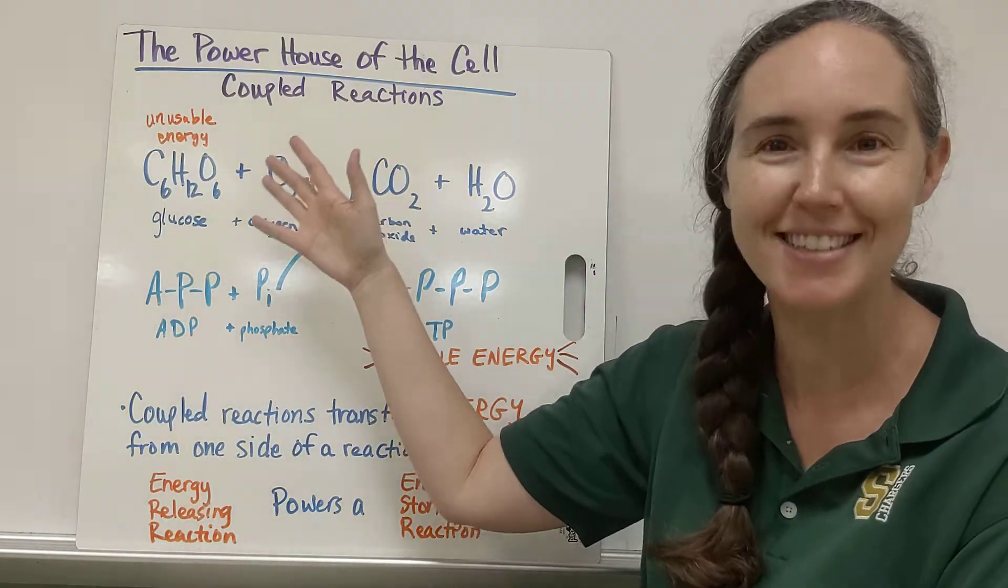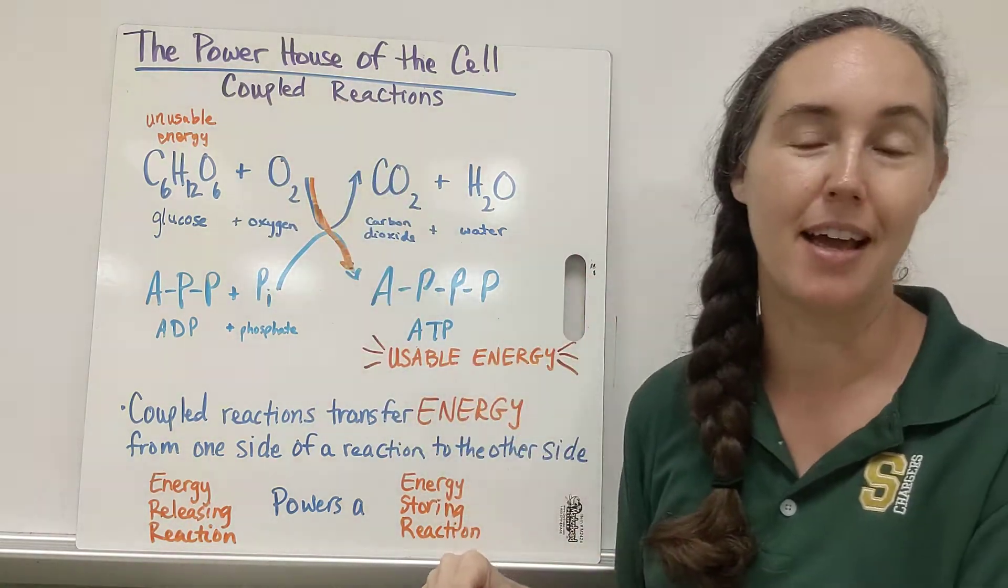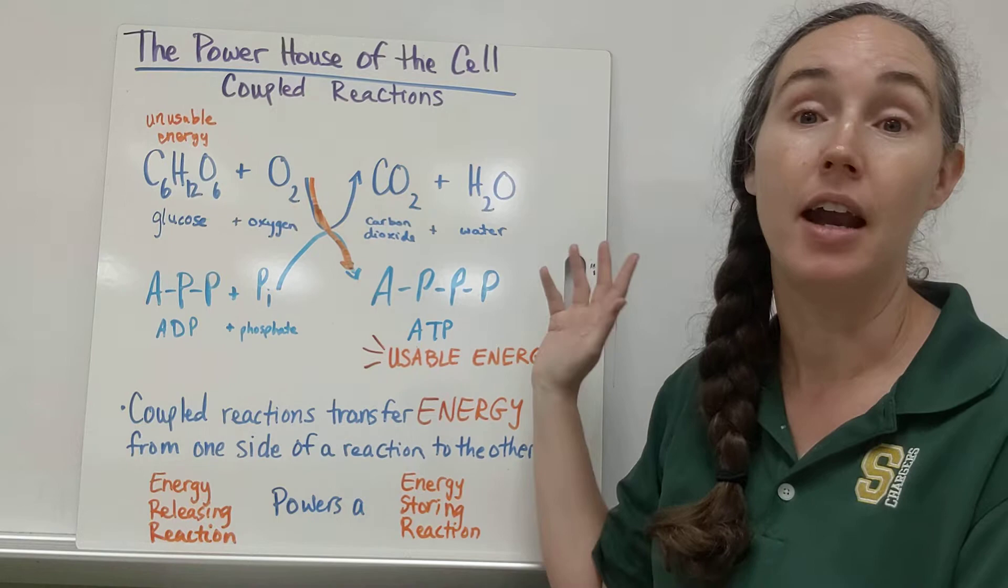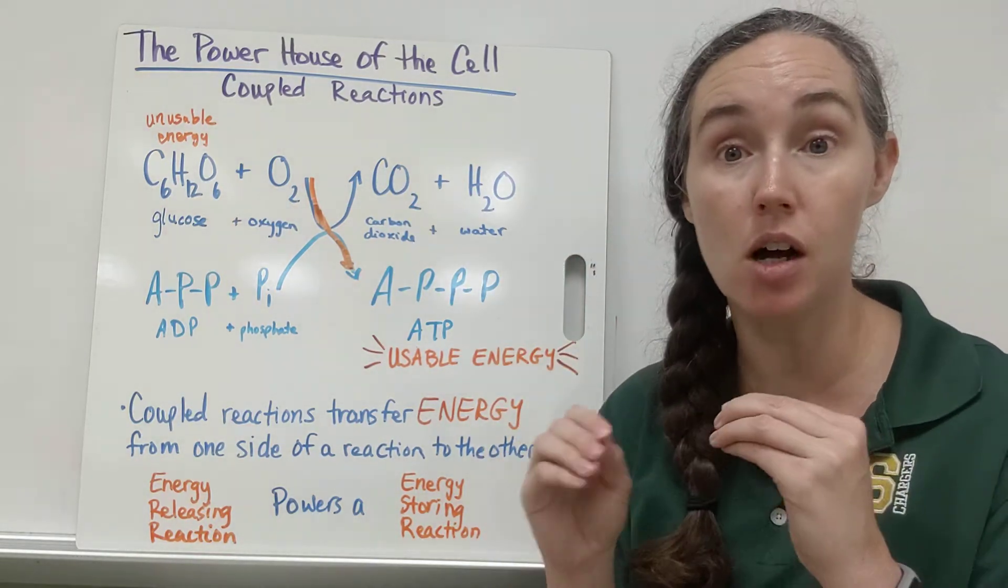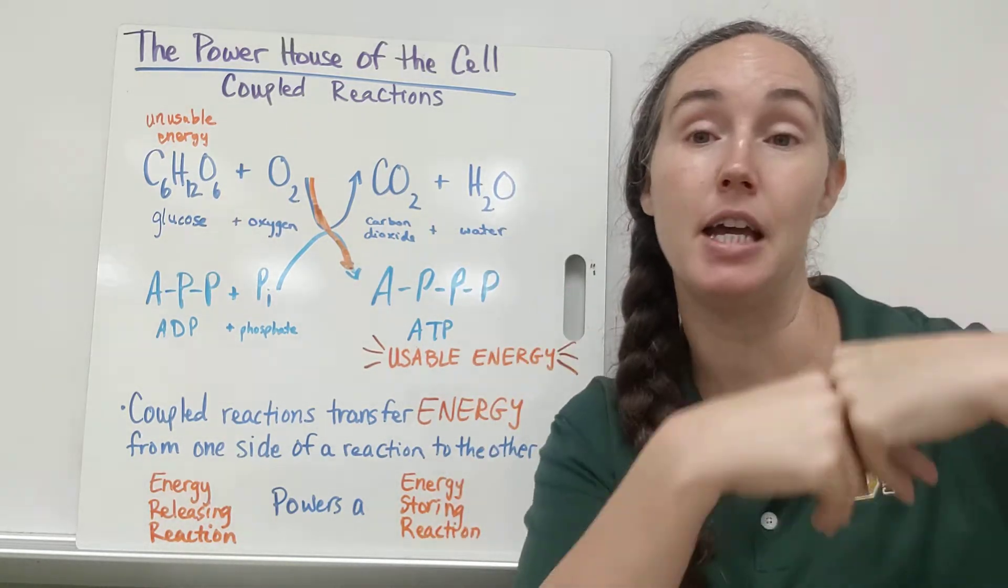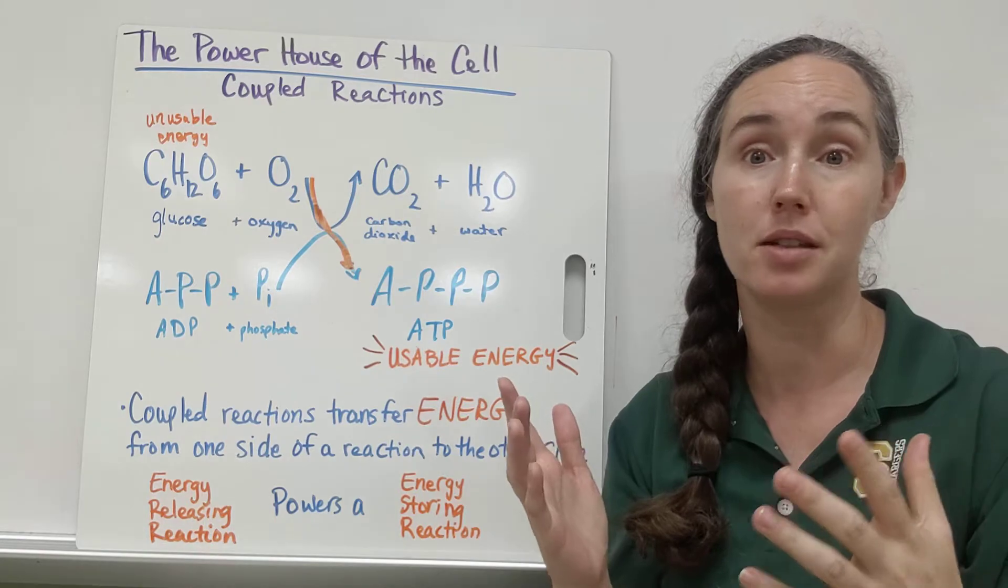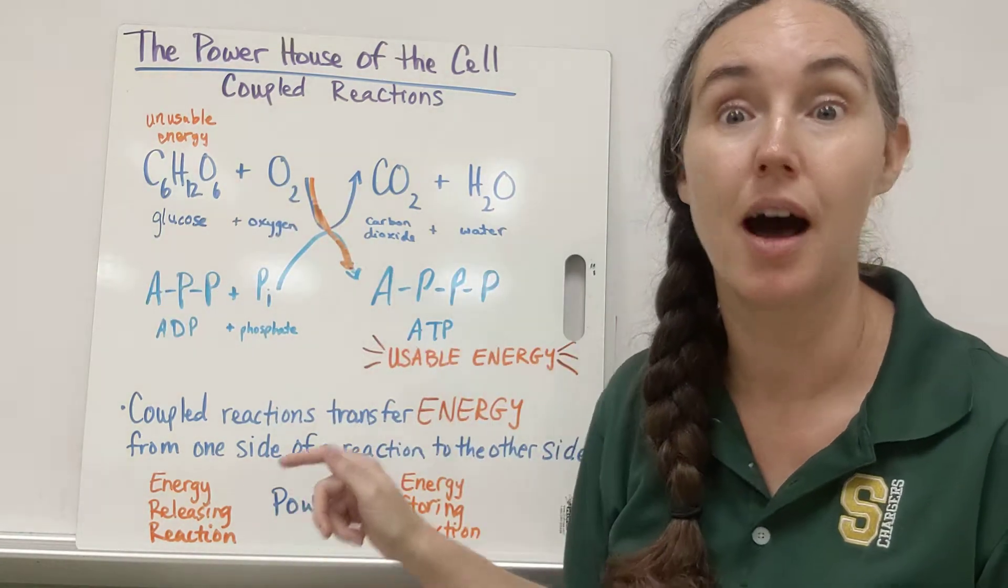We're releasing energy here and then storing energy as ATP here. Now as we know, ATP does not hold energy very long and is used like that energy, that P is popped off and that energy is used in the cell somewhere to power a cell process almost immediately. And then this happens again.